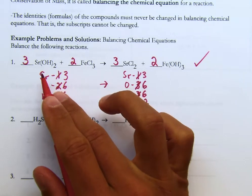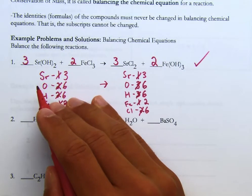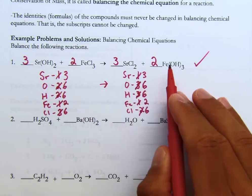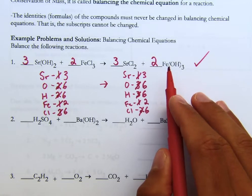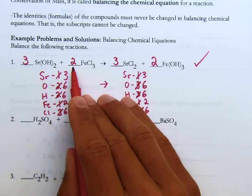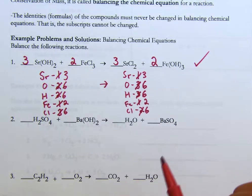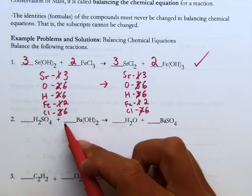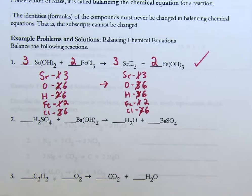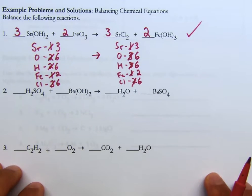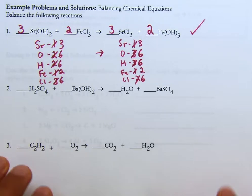The process of balancing is not a one-size-fits-all approach. Count how many are on the left, count how many are on the right, change the coefficient, recount, and go back and forth. You always want the lowest integers for your coefficients. You can pause the video and try to balance the next two equations on your own before I work through them.